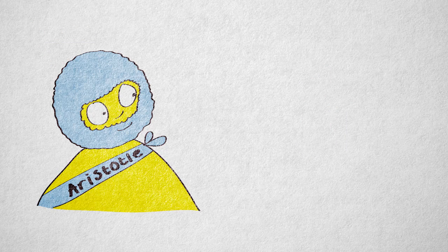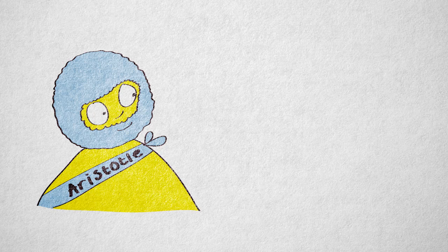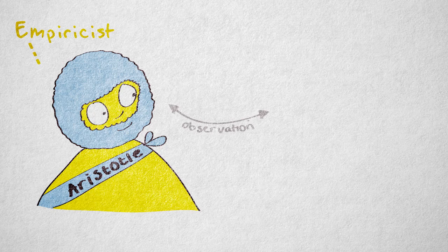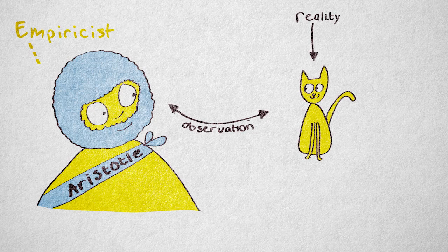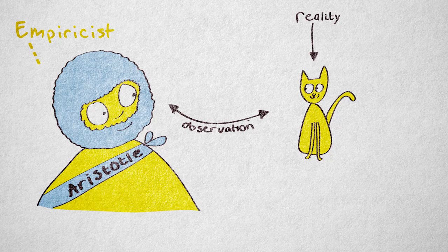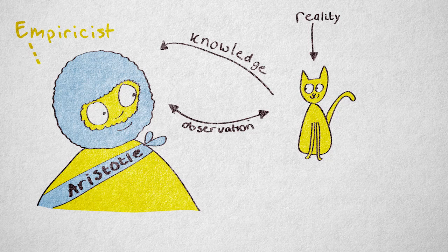Aristotle also disagreed with Plato on how we can gain knowledge about the true nature of things. Aristotle was an empiricist. He believed our sensory experience gives an accurate representation of reality, so we can use our senses to understand reality. He believed that, ultimately, knowledge comes through observation.